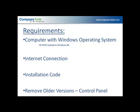The requirements: you'll need a computer with a Windows operating system. If you have a Mac, hopefully you can boot to a Windows operating system. You'll need an internet connection to download Pathfinder Office and also to activate the license. You will need to find that license or the installation code. And if you do have an older version, you'll need to go to your control panel and remove it.